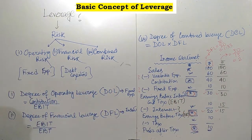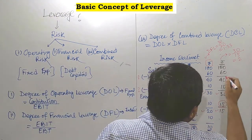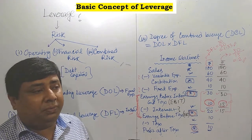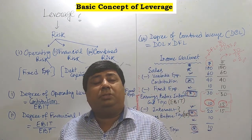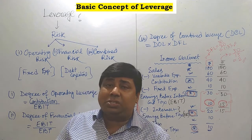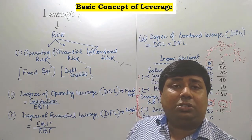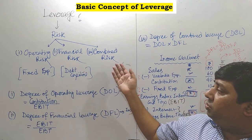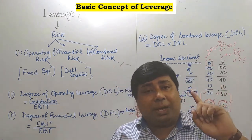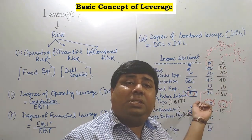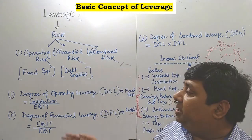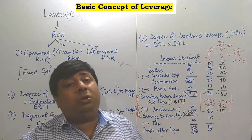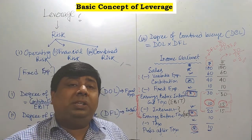To summarize: leverage is our tool to measure different kinds of risk in a business — mostly three kinds: operating risk, financial risk, and combined risk. The calculation is totally dependent on the income statement, as all parameters are collected from it. If you take more loan and pay more interest, your financial risk will increase. Similarly, if you invest more as overhead or fixed expenses, your operating risk will also increase.